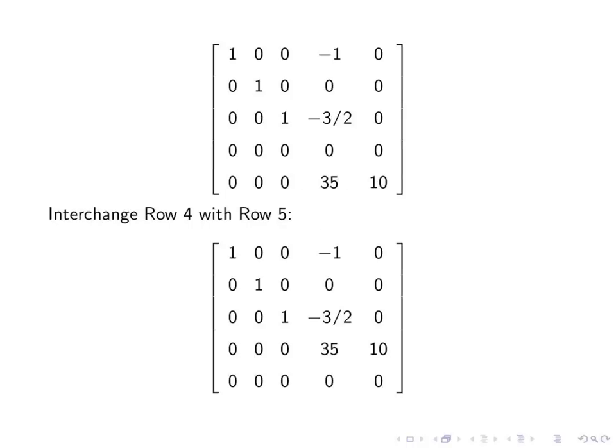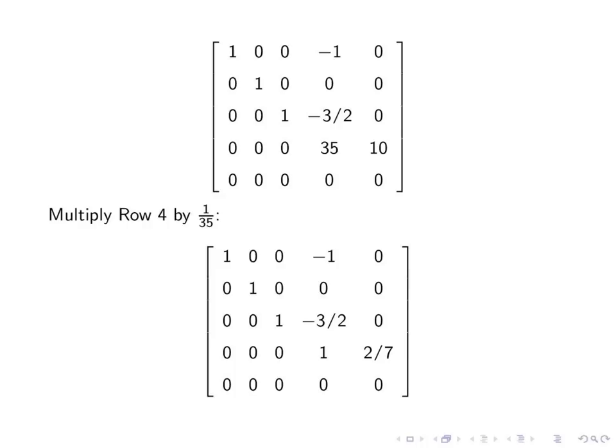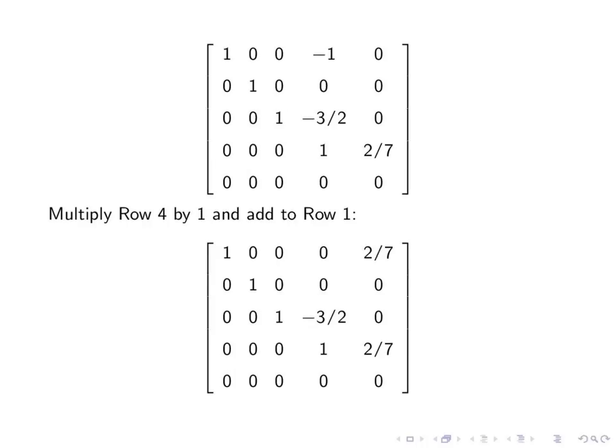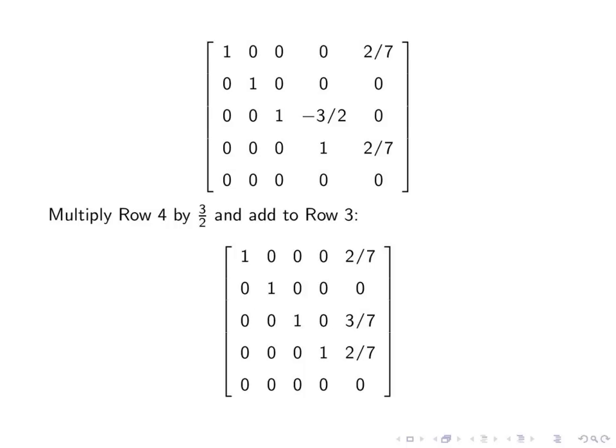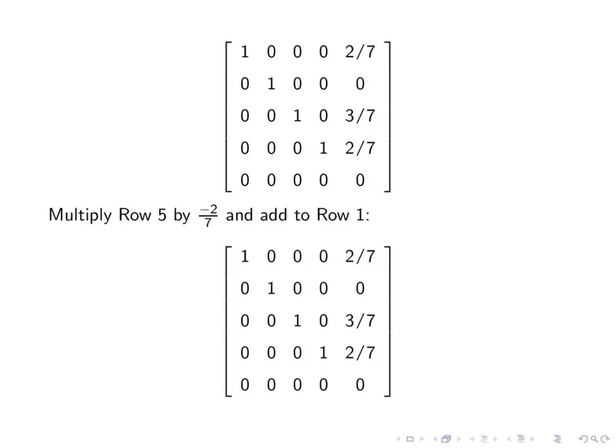So we interchange row four with row five. That puts the zeros along the bottom there. We then multiply row four by 1/35th and continue in the same fashion. We get a zero in the fourth row, first column, and so on. And at this point, we're done. Notice we have ones in the northwest corner, zeros along the bottom row. And we have our constants column is three simple fractions. Let's look at them numerically.